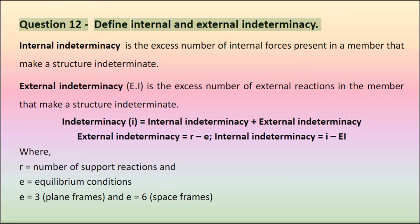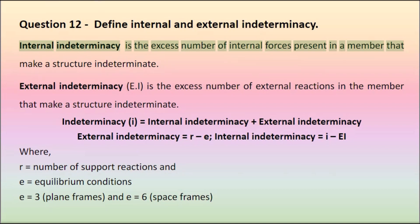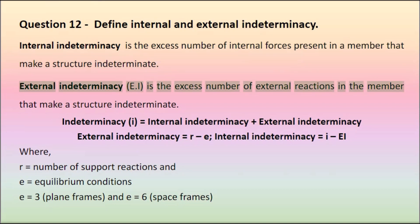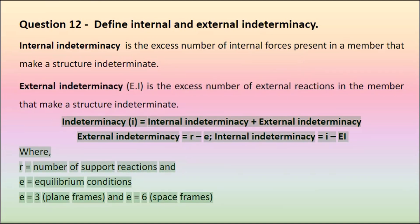Question 12: Define internal and external indeterminacy. Internal indeterminacy is the excess number of internal forces present in a member that make a structure indeterminate. External indeterminacy (EI) is the excess number of external reactions in the member that make a structure indeterminate. Indeterminacy I equals internal indeterminacy plus external indeterminacy. External indeterminacy equals R minus E. Internal indeterminacy equals IEI, where R equals number of support reactions and E equals equilibrium conditions. E equals 3 for plane frames and E equals 6 for space frames.